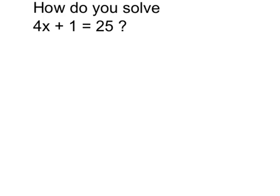Generally, I want to work in the reverse order. Here, 4 is multiplied by x, and then 1 is added. So to reverse it, I'm going to subtract 1 from both sides before I do the division.